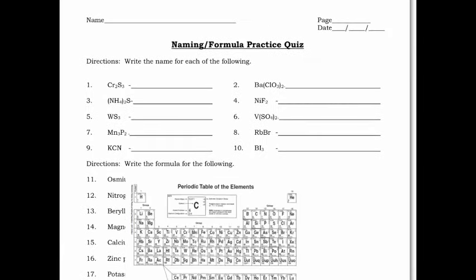To start off we're going to be naming from the formula and we're going to follow the steps discussed in class that will work for any situation. The first thing we're going to do in number one is name the first element — and if you need to look in Table S, go ahead and do that. So that's chromium, and I'm going to leave a space just in case it requires a Roman numeral. The only time it's required is if that element has more than one positive oxidation number, so we'll check that in a second.